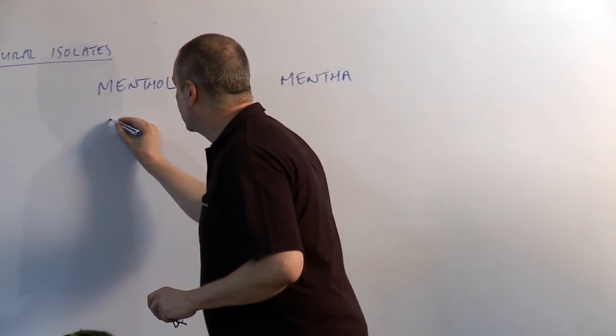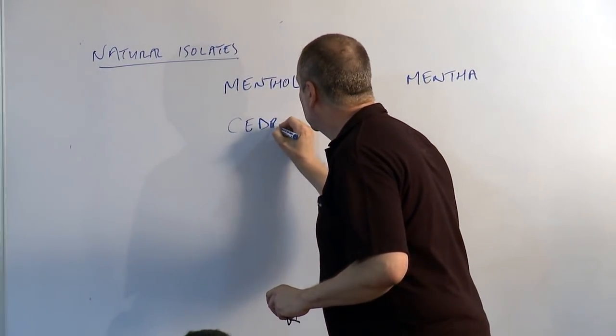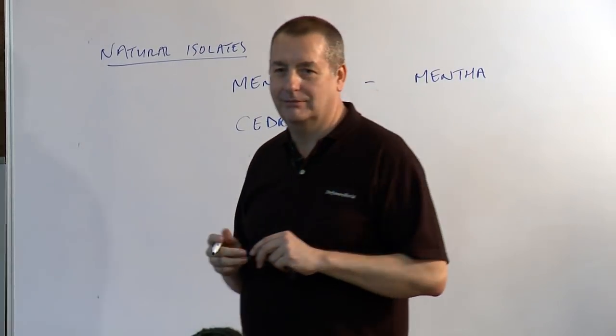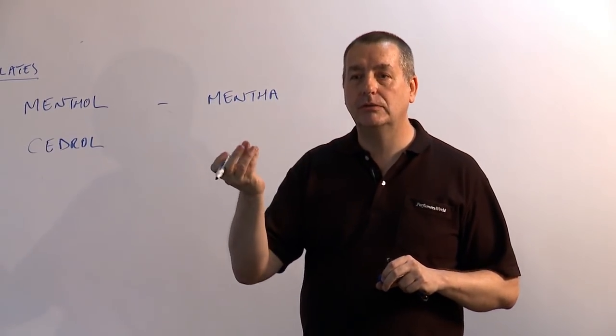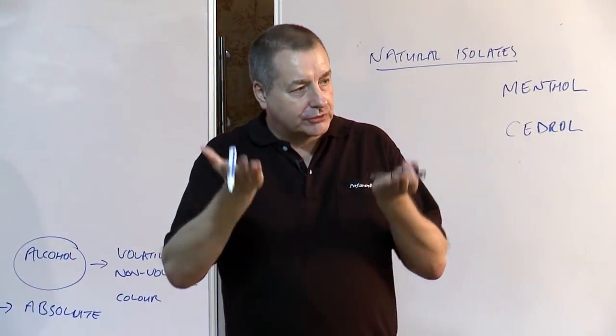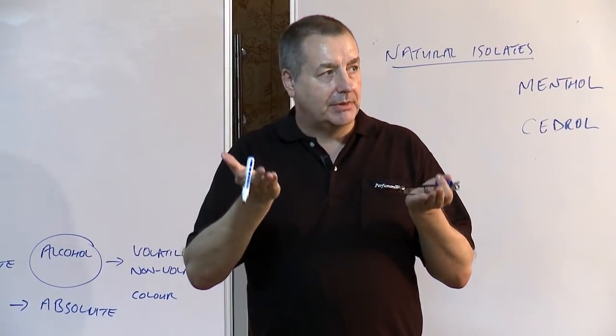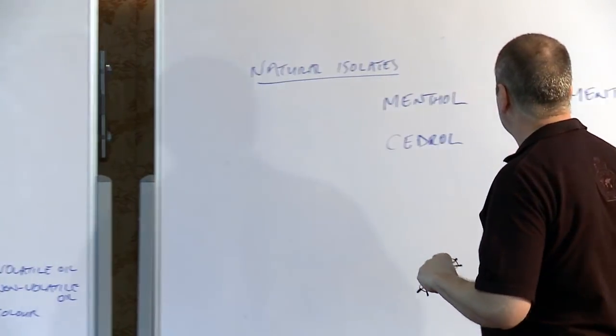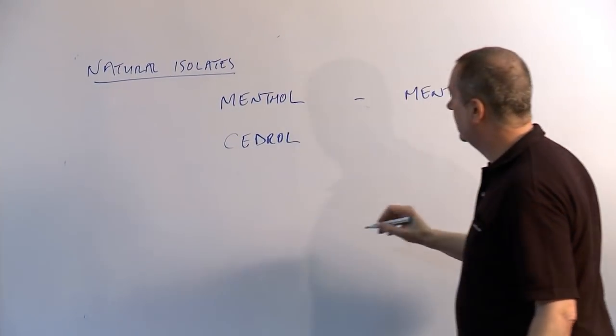Another one I'll talk about is cedrol. Anybody like to guess where cedrol comes from? Cedarwood. It's the alcohol found in cedarwood. And it's a crystal too. So if you get cedarwood oil and you freeze it, you'll find that crystals drop to the bottom, sediment on the bottom. And those crystals are cedrol, the alcohol found in cedarwood.